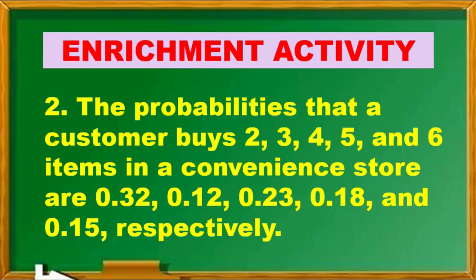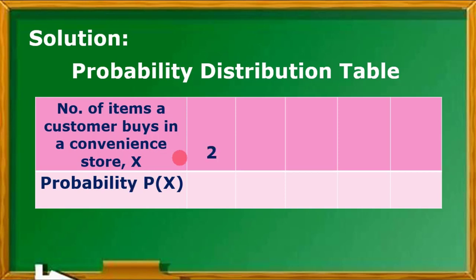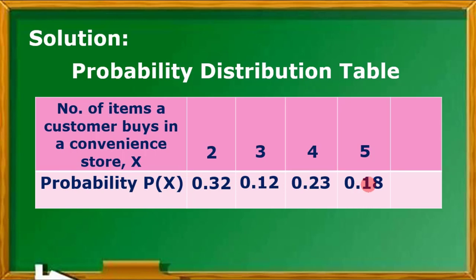For number 2, we have the probabilities that a customer buys 2, 3, 4, 5, or 6 items in a convenience store. We construct a probability distribution table where x is the number of items bought. P(2) = 0.32, P(3) = 0.12, P(4) = 0.23, P(5) = 0.18, and P(6) = 0.15.